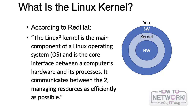For example, the kernel is responsible for determining whether a specific software can access a specific hardware - whether it can send instructions to your graphics card or to your network interface card. Whatever the hardware is, the operating system controls how the software and processes are communicating, sending to or getting instructions from that specific hardware component.